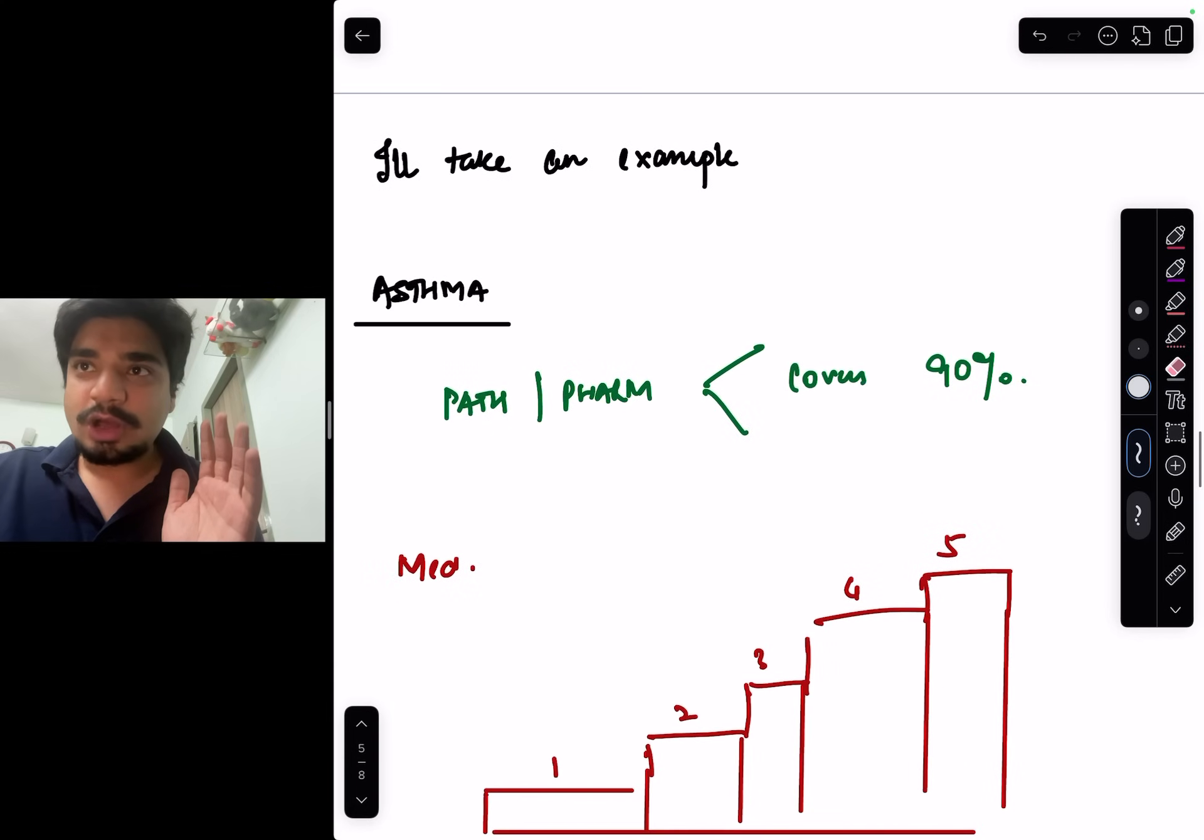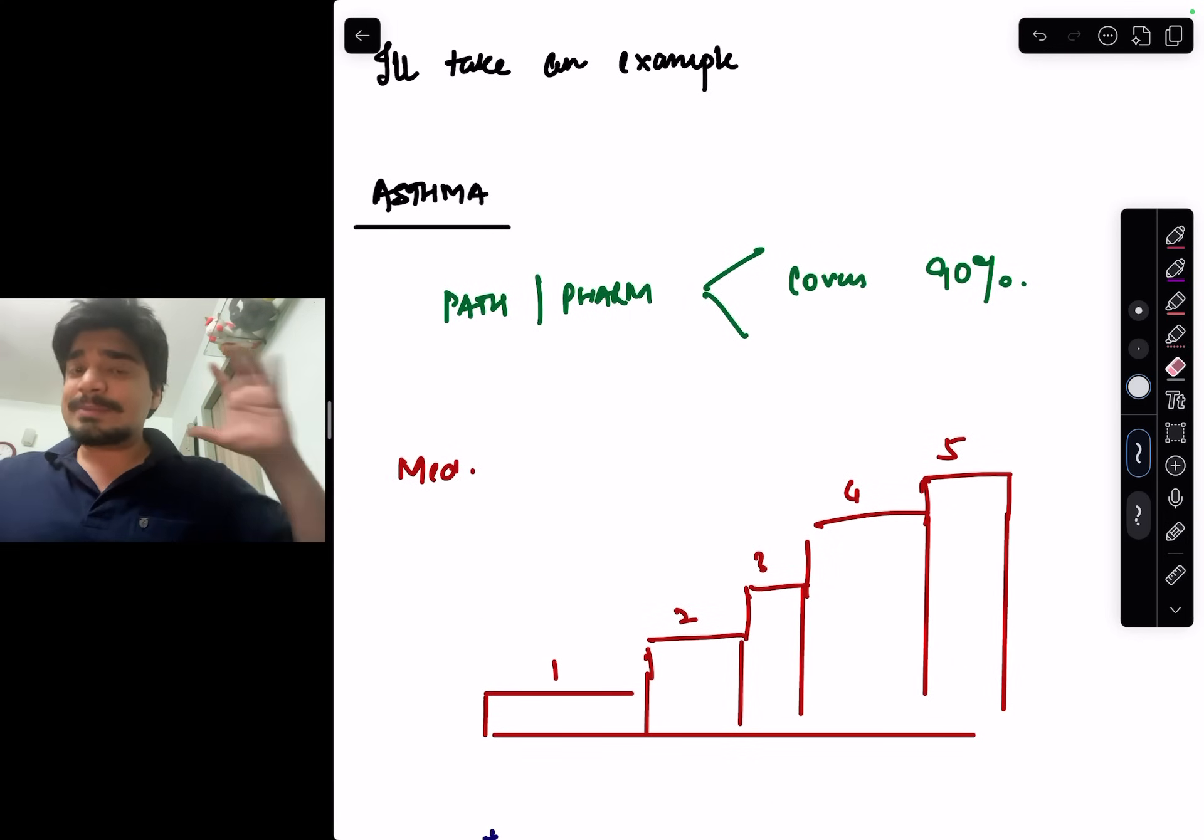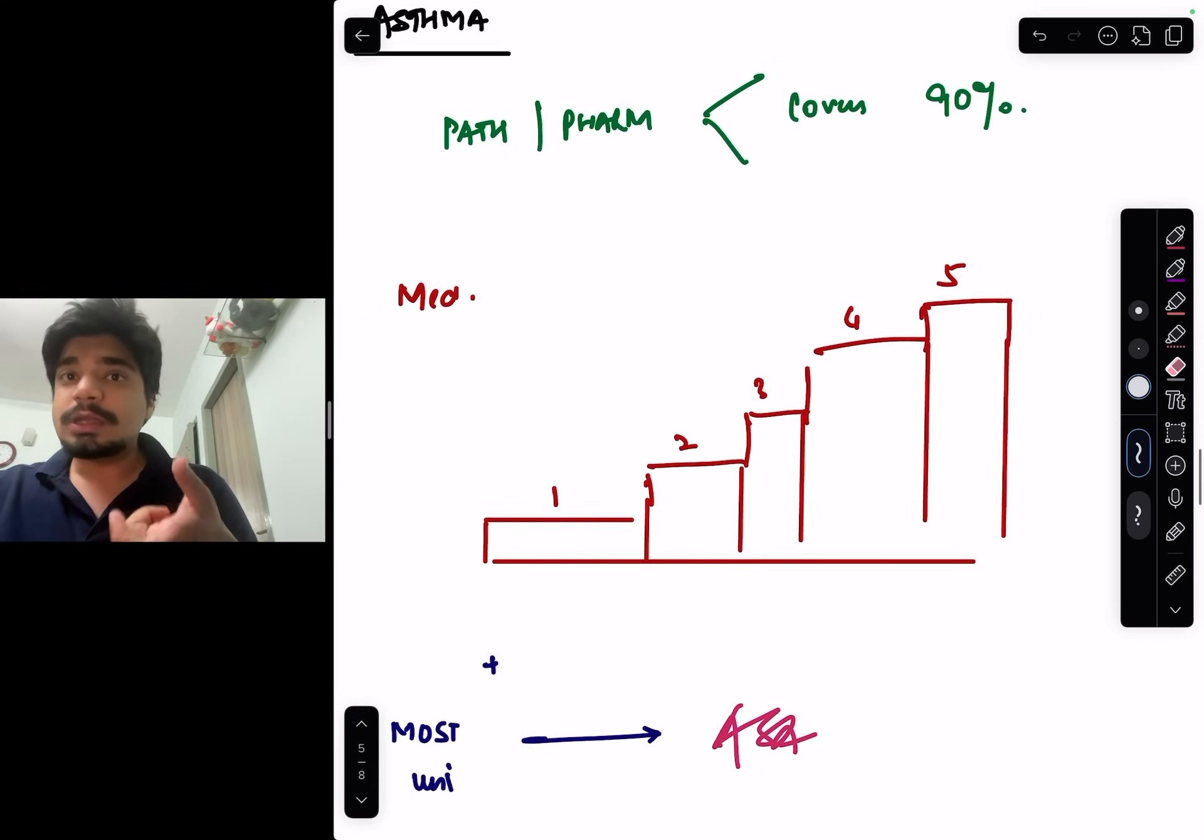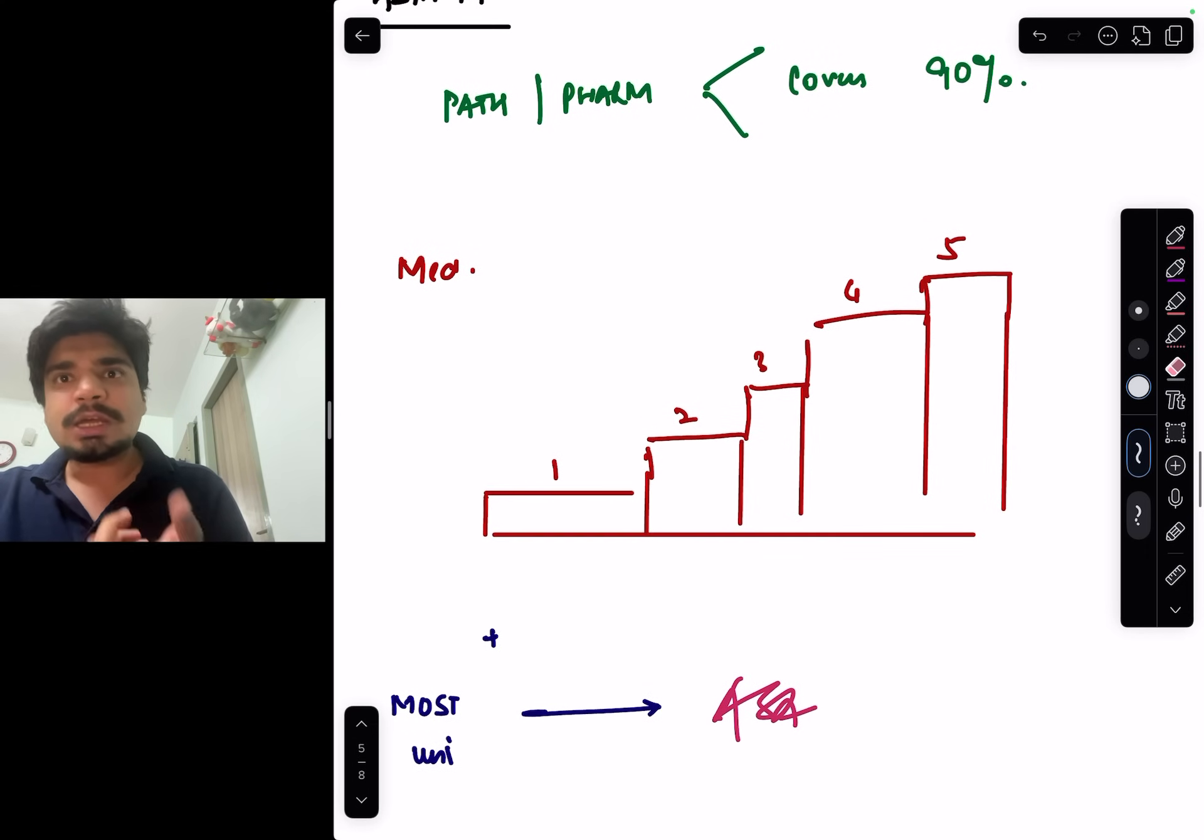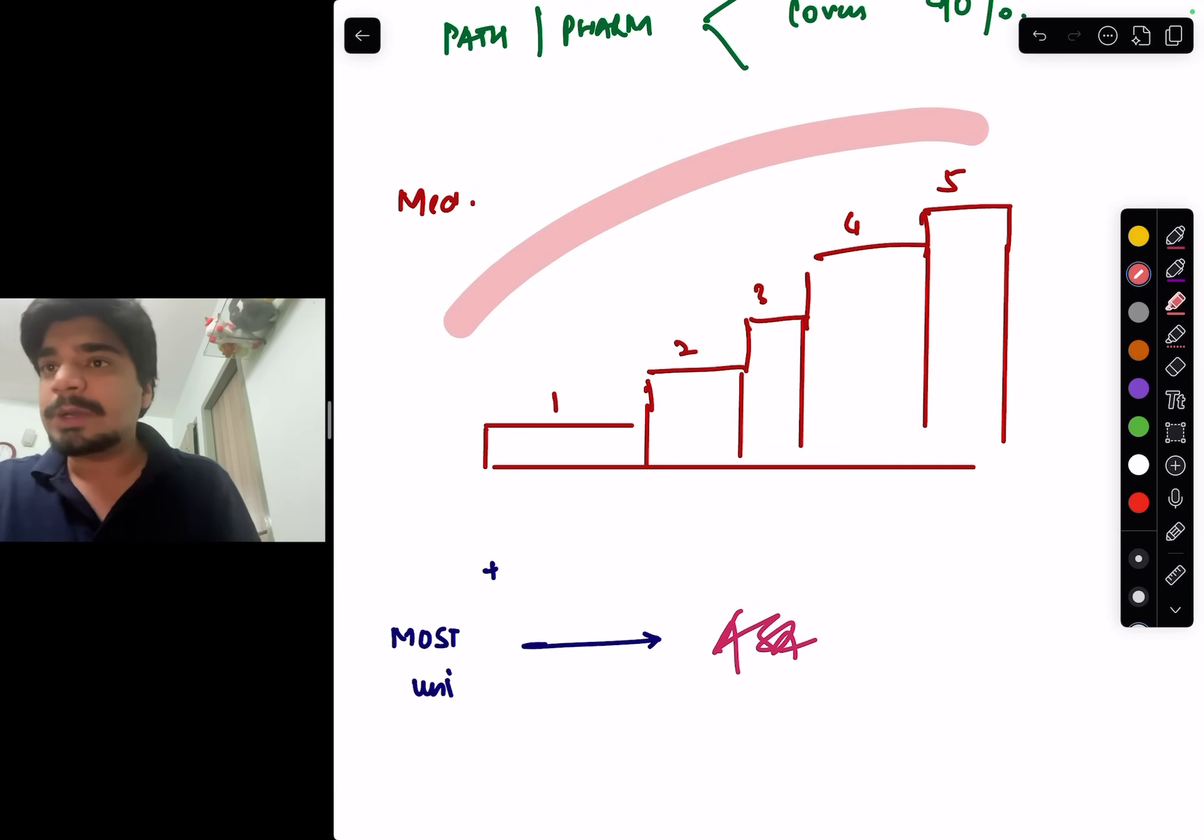I'll take an example. For example, asthma. Most questions on asthma, even in NEET PG theory, will be on pathophysiology of asthma. They will be about how does asthma act, interleukin-13, IgE type hypersensitivity, and so on. What is extra being told to you in medicine? It is only the diagnosis, diagnostic criteria, and the treatment guidelines, the stepwise treatment of asthma that we talk about, the step 1, 2, 3, 4 that we talk about. Most universities sometimes will ask about acute severe asthma.